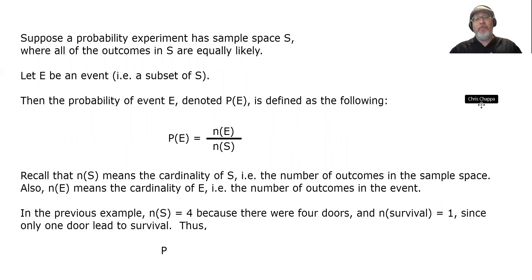In the previous example, n(S) was equal to 4 because there were 4 doors. Pick a door, there are 4 possible doors to choose from. And n(survival) was equal to 1 since only 1 door led to survival. Thus, the probability of survival equals the cardinality of survival divided by the cardinality of S, which equals 1 over 4.